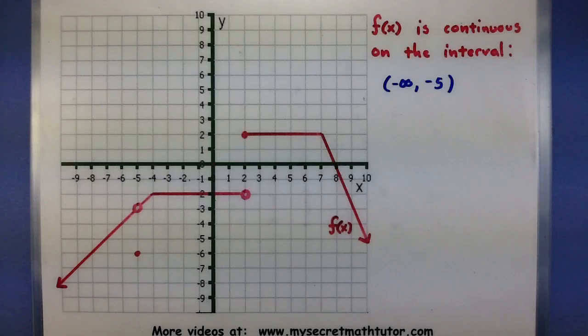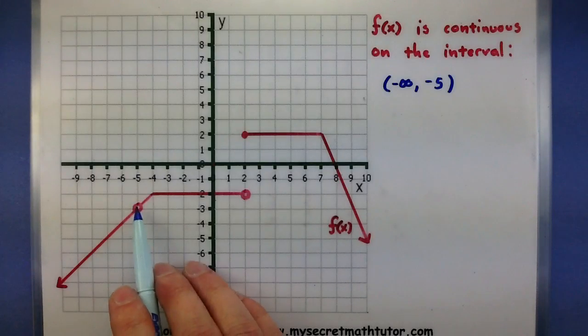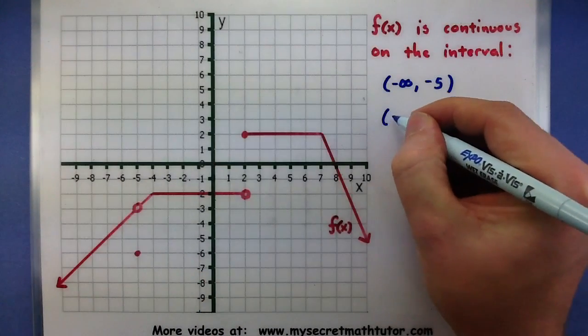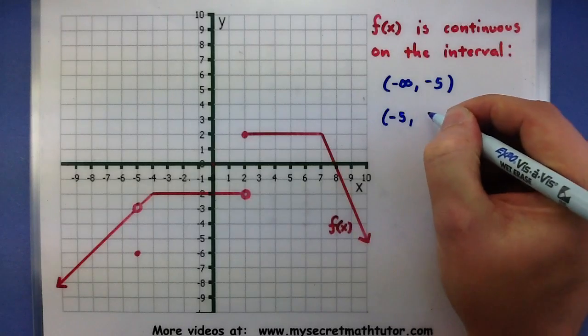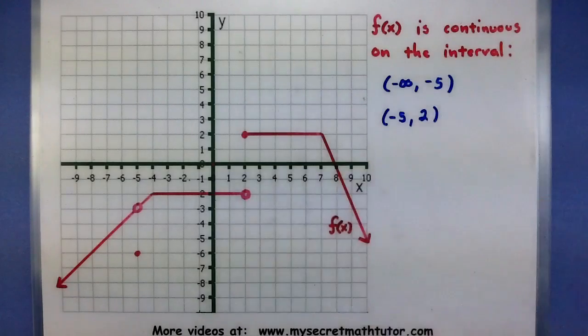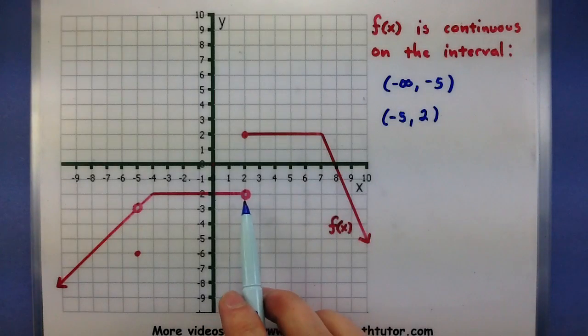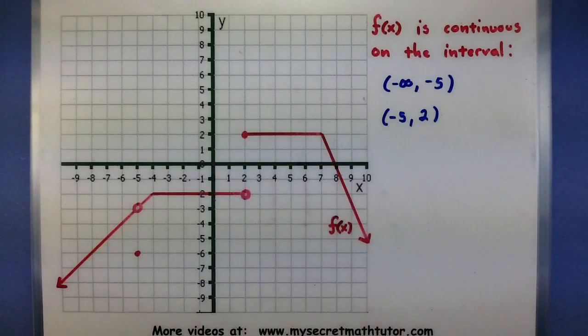The next interval where it doesn't have any breaks or gaps is between negative 5 and 2. You can see I don't want to go beyond 2 because there's a giant gap right there.